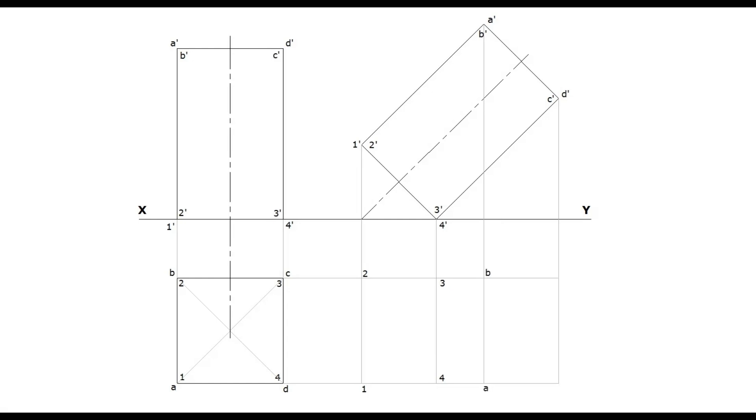While looking from the top, the top base is fully visible. Hence, all the edges AB, BC, CD and DA should be drawn as dark lines.